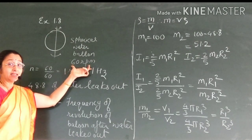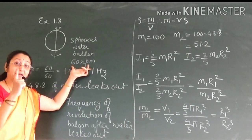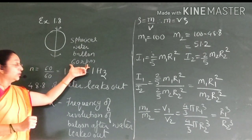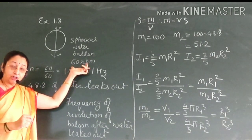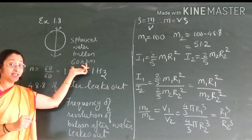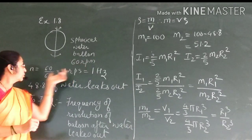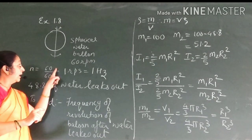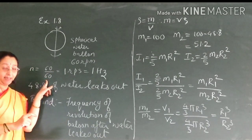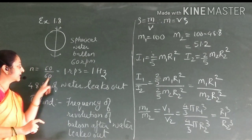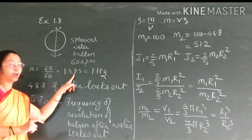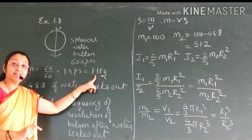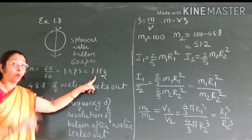The rotation is 60 rotations in 1 minute. But is this the frequency of rotation? No — frequency of rotation is rotations per second. So, 60 rotations in 1 minute divided by 60 seconds gives 60 upon 60, that is 1 rotation per second. So, 1 Hz is the frequency of the water balloon.